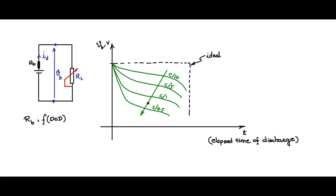You will see this family of curves where the arrow indicates increasing discharge current ID. It is very important to note that C-rate plays a very important role in selecting a battery — if you want a specific discharge time on the x-axis and want the terminal voltage to remain within a particular limit, you must choose an appropriate C-rate and also the appropriate depth of discharge. These are important parameters to consider while selecting a battery for a given application.